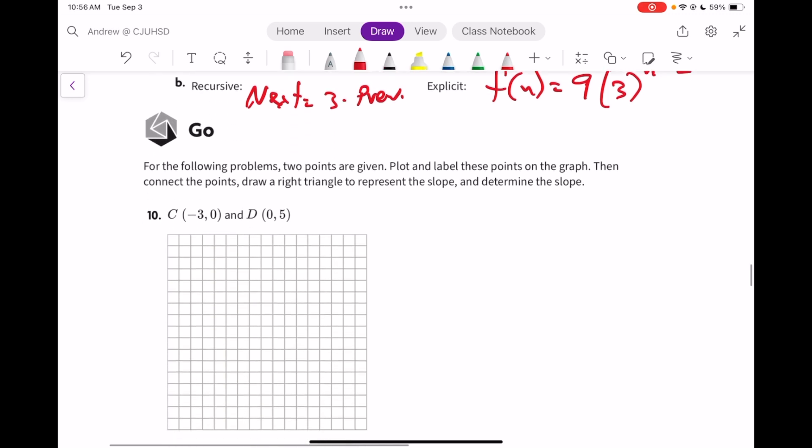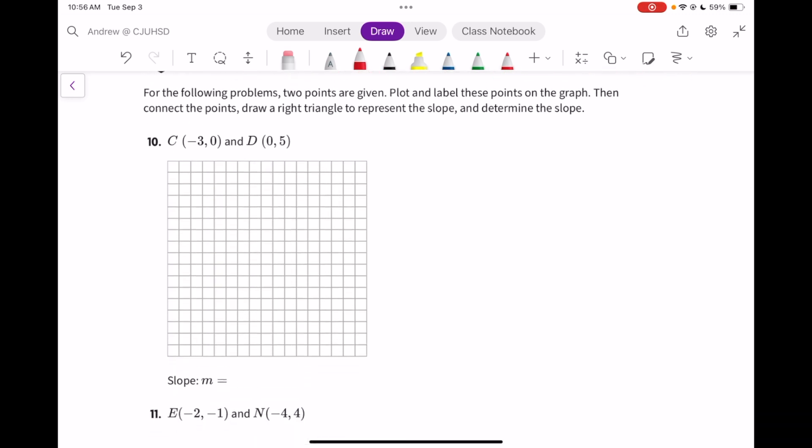All right, in our go section, for the following problems, 2 points are given. Plot and label these points on the graph, connect them, and draw a right triangle. I'm just going to do one of these. So it's sort of up to me where I put this graph. Not too accurate. Sorry about that. Negative 3, 0 would be right about here. And 0, 5 would be 1, 2, 3, 4, 5, right about here. If I draw a slope triangle between them, I'm going up. How far? 5 and over 3. So, change of y over change of x would be 5 thirds. I'm going to leave the rest of those problems to you.